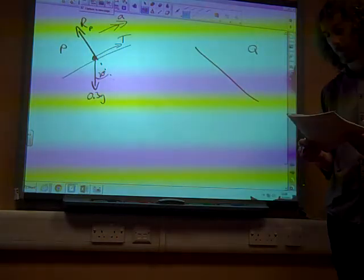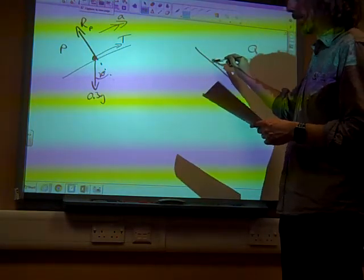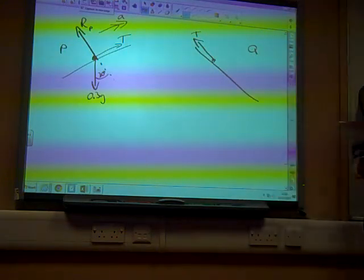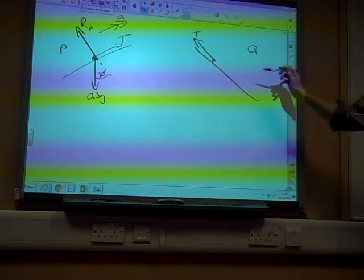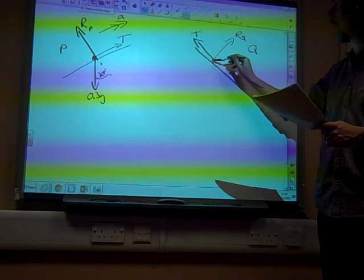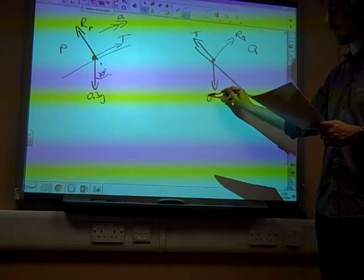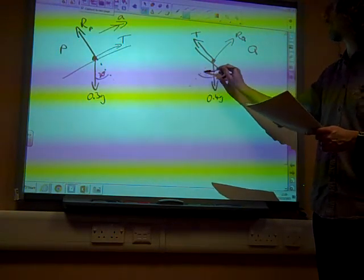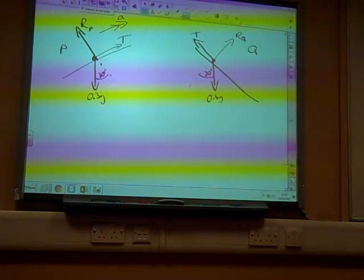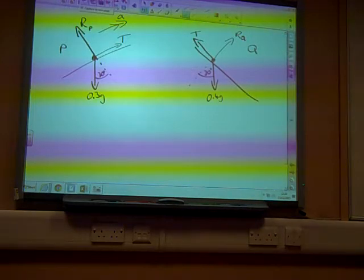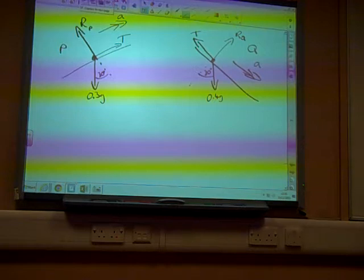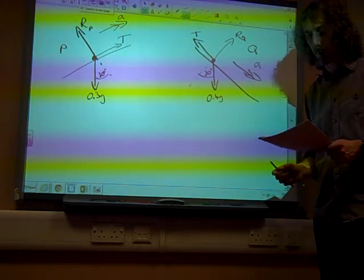On the other side of the roof, particle Q is behaving in a largely similar way. We have the tension in the string, equal and opposite to the other end of the string. We've got a normal contact force, RQ there. And we've got a weight of 0.4G. And here we have an angle of 30 degrees, because the angle of the slope of the roof is 30 degrees on that side as well. So, there's my diagram. And Q is accelerating with the same acceleration in that direction down the roof. So, that's what's going on.